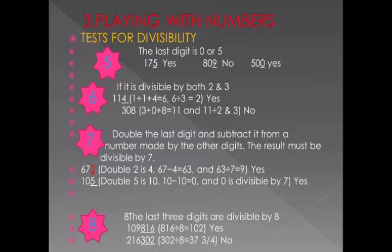For divisibility of 8: you have to circle the last three digits. Check whether the last three digits are divisible by 8. If the last three digits are divisible by 8, then the whole number is also divisible by 8. So for 8, circle the last three digits and divide them by 8 — if they divide evenly, the entire number is divisible by 8.